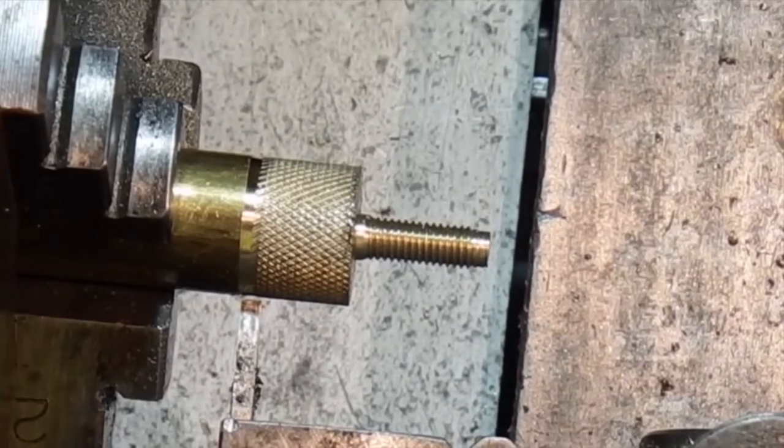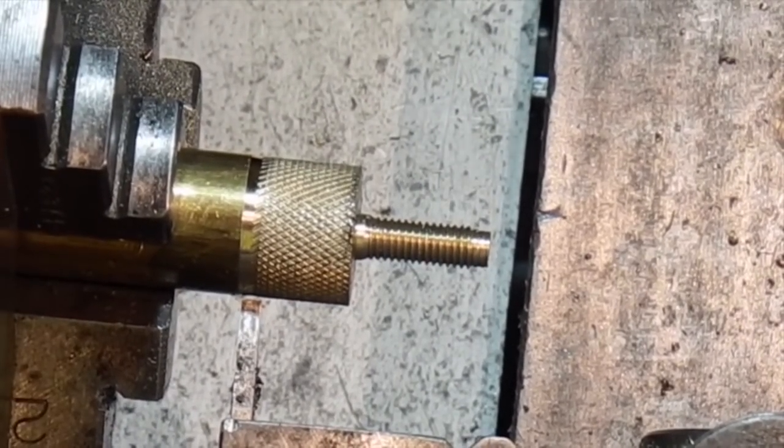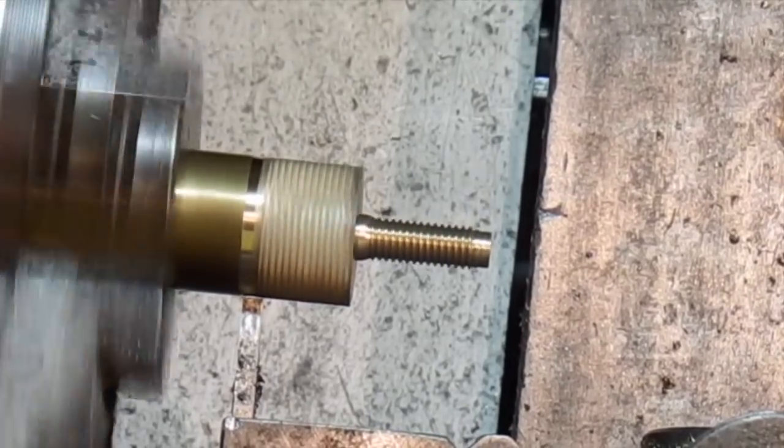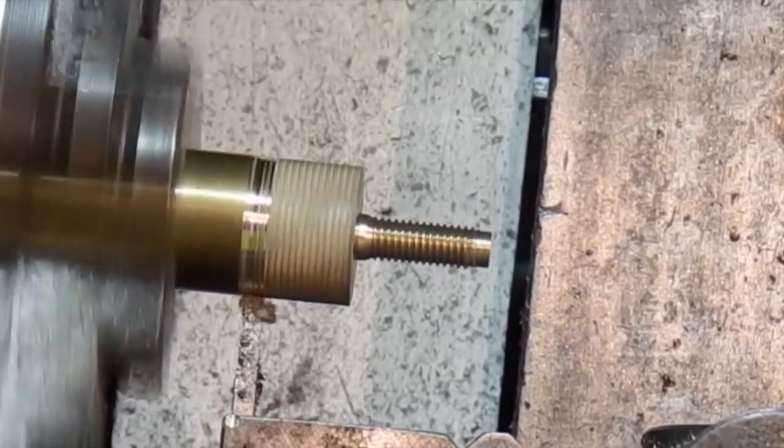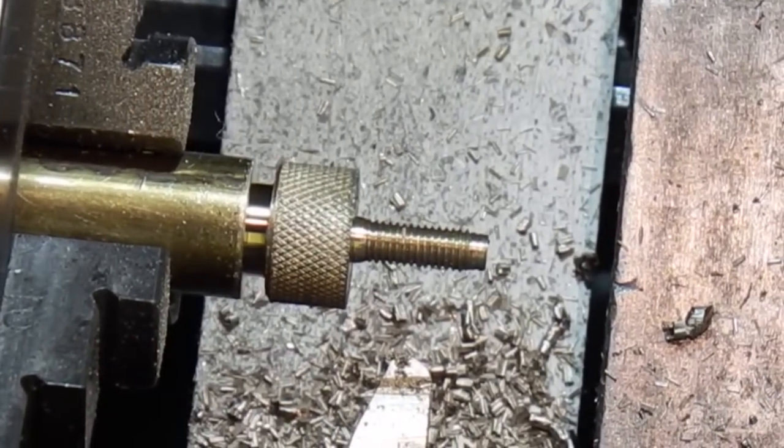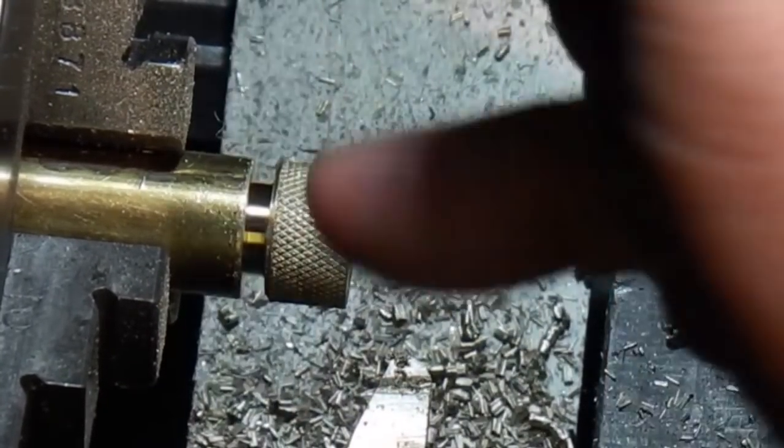Now I've put my parting off tool in. I just want to do an undercut on the end. Cut a small groove where I'm going to part it off. Now what I want to do before I part it off is put a chamfer on each side.